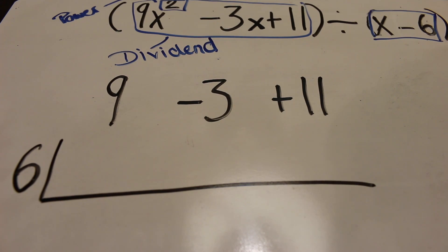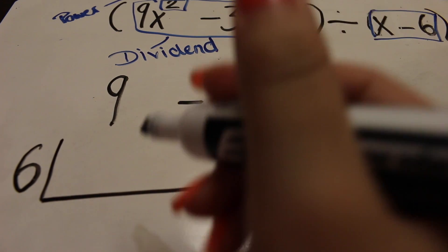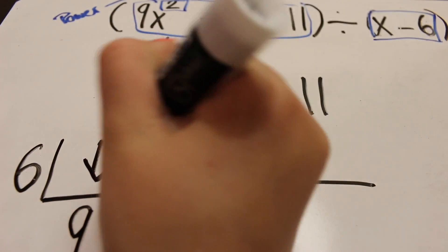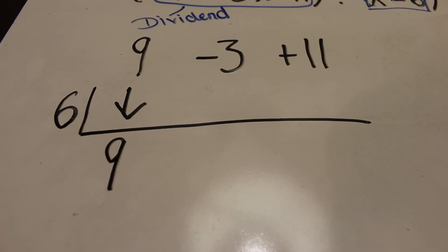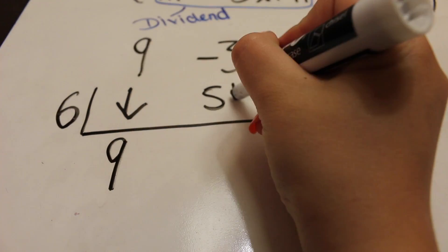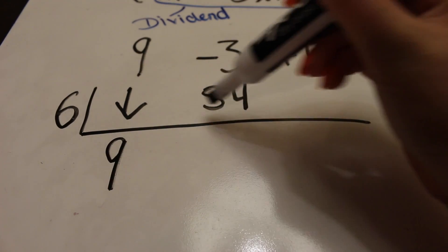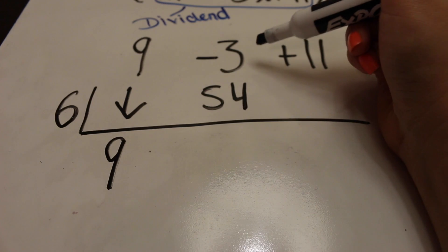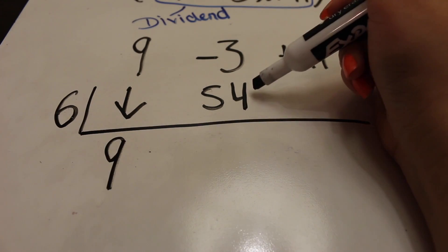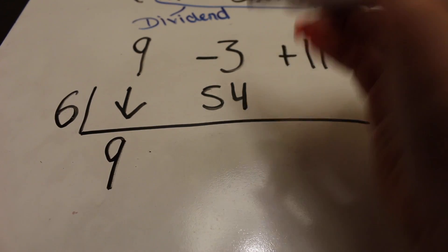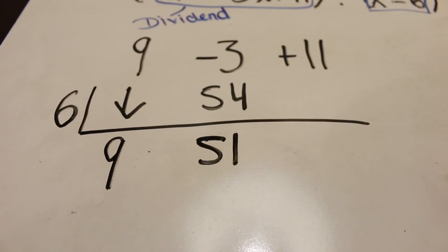Look at the first coefficient and bring it down — that's 9. Now take 6 and multiply it by that number: 6 times 9 is 54. Put 54 under the negative 3.